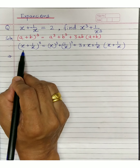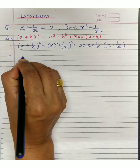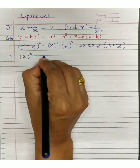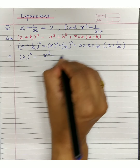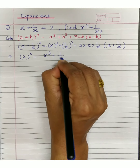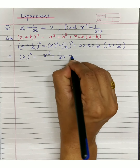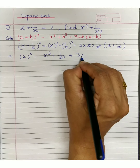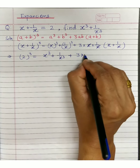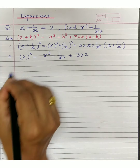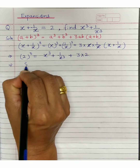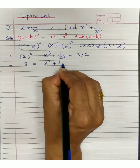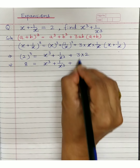Now substitute the value. x plus 1 upon x is given as 2, so 2 cube is 8. The first term becomes x cube, the second term becomes 1 upon x cube. Observe: 3 into x into 1 upon x gives 3, and x plus 1 upon x is 2, so 3 times 2 is 6.